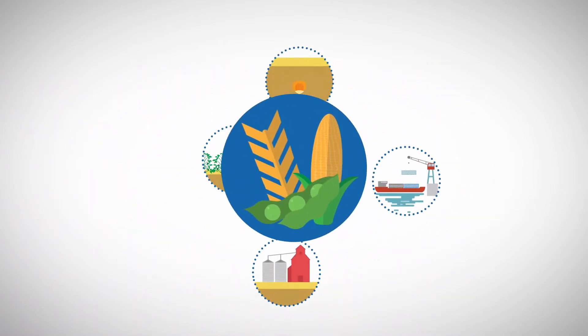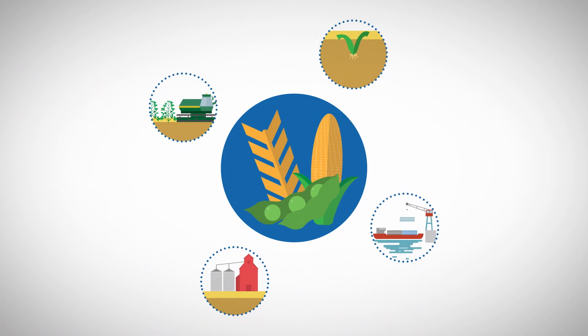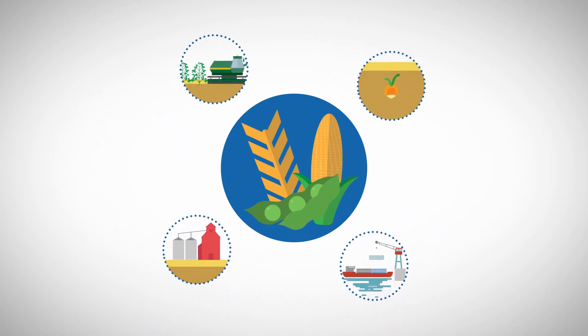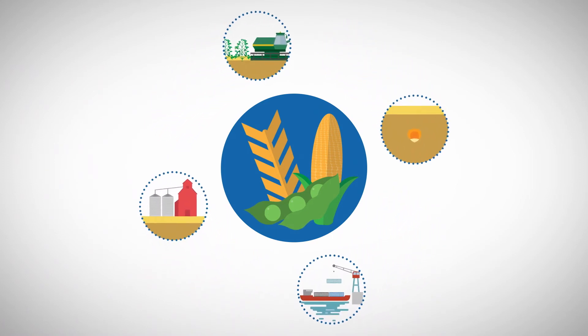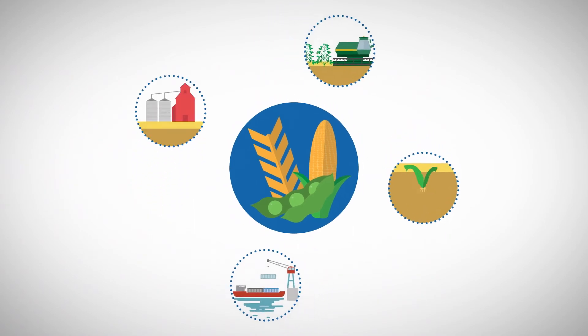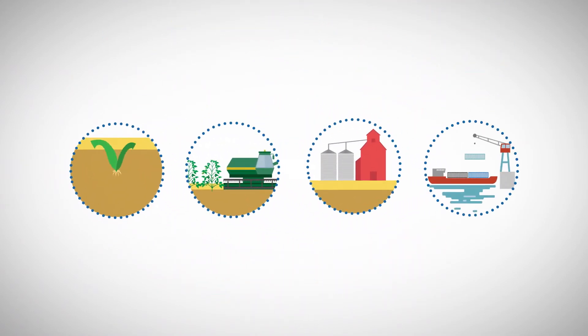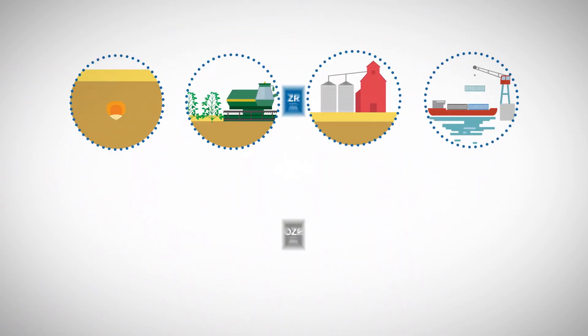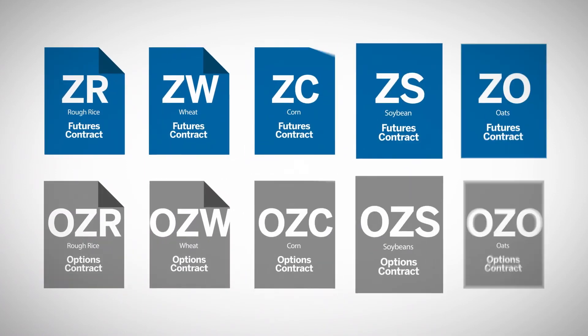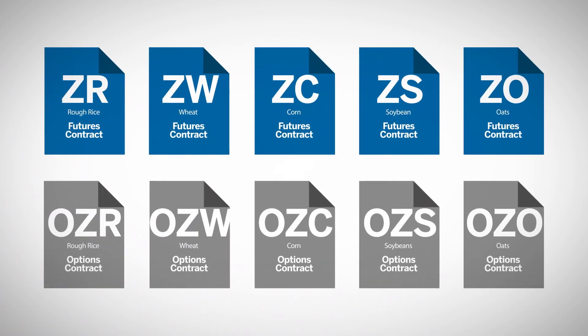At every stage of the grain and oilseed chain, from planting, growing, and harvest, to exporting, milling, and baking, market participants face volatility and the risk of adverse price movements caused by the idiosyncrasies of supply and demand. Futures and options on grains and oilseeds provide a means to manage this risk, as well as take advantage of potential profit opportunities.